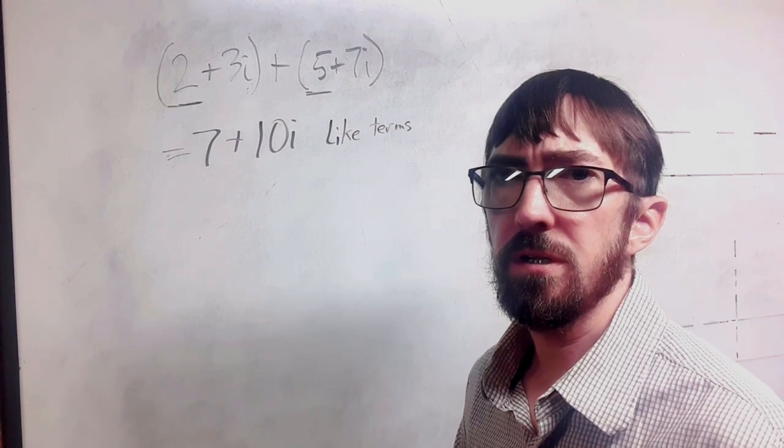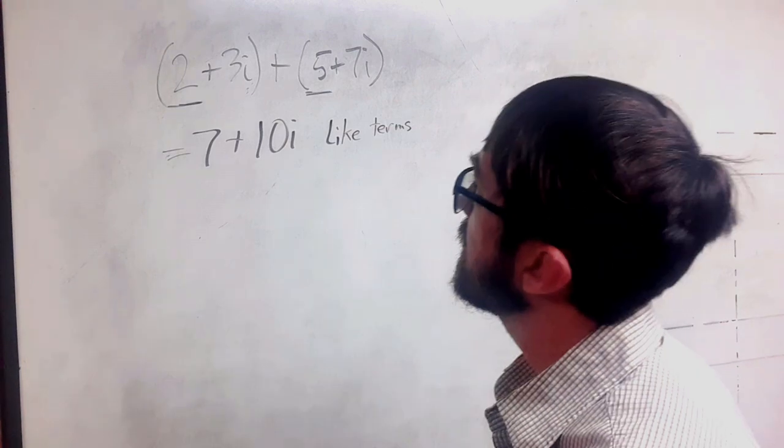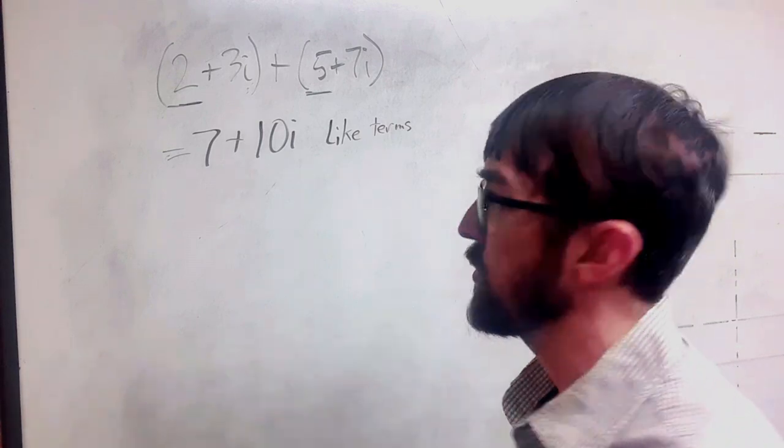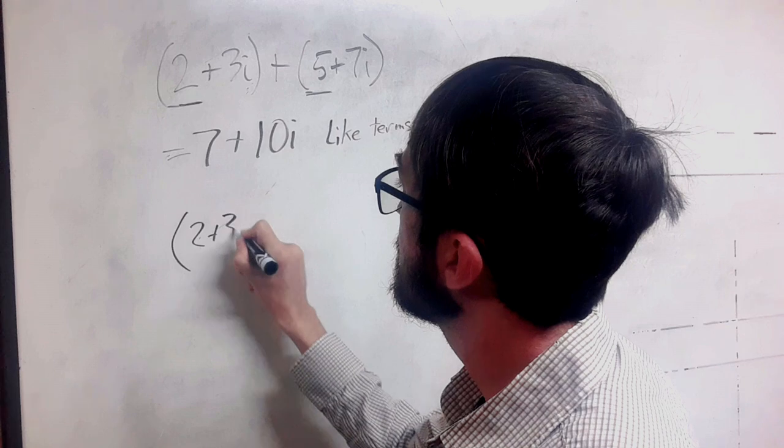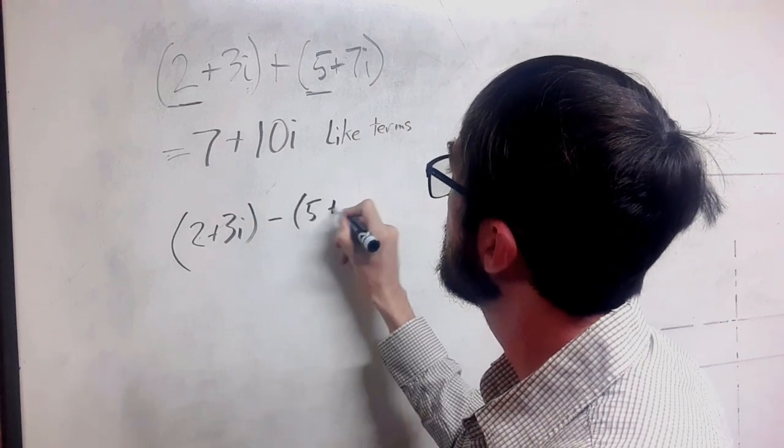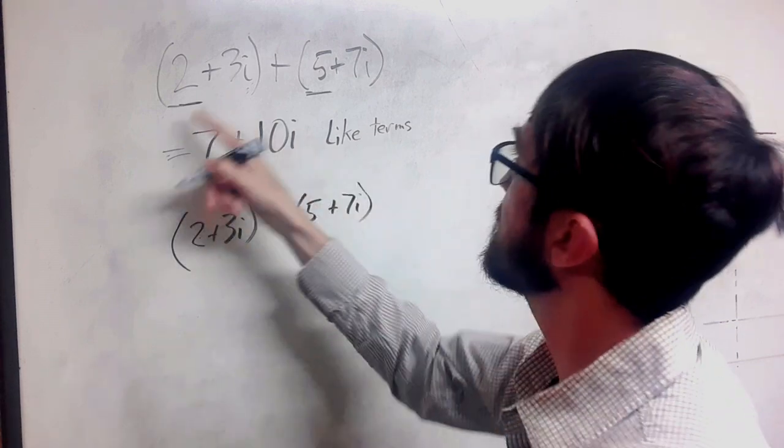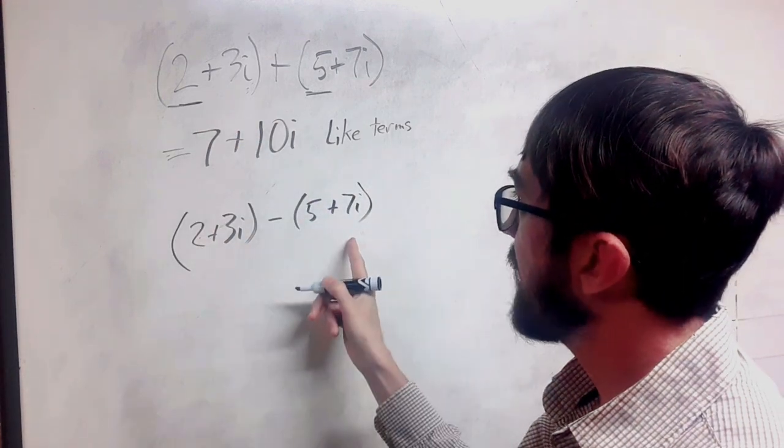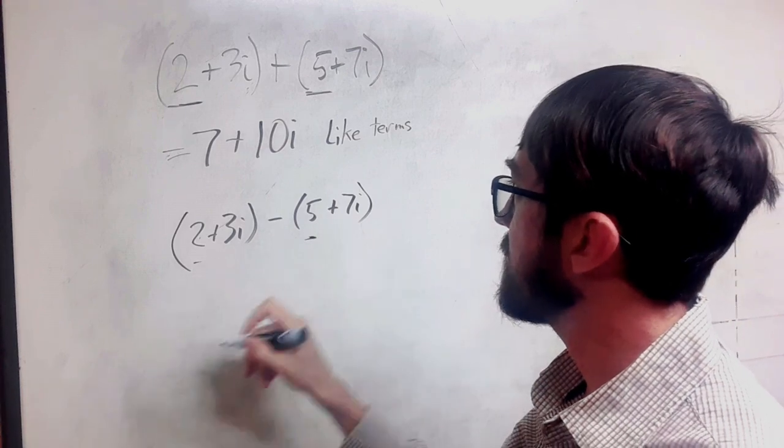The next thing that we are going to do is subtraction, it's just slightly more difficult. So I'm using the same two complex numbers, but I'm going to subtract this time. So I have, again, I'm going to look at like terms.